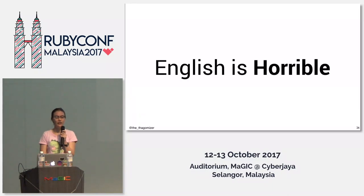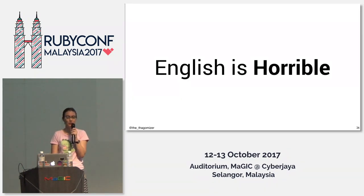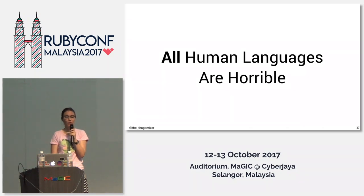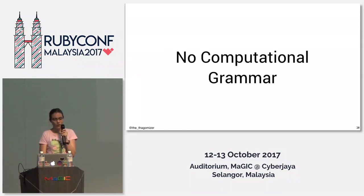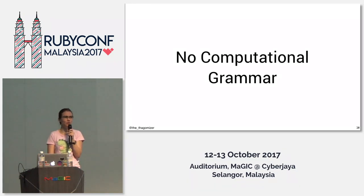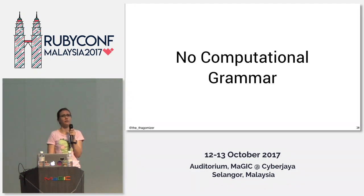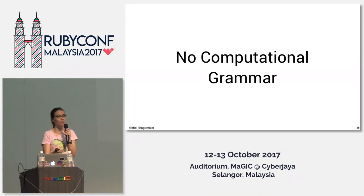English is horrible, and I didn't even get into irregular verbs, slang, idioms, and all the other bits that make a human language a human language. But all human languages are horrible — in these ways or in different ways. Every language has weird things you only understand once you're fluent. One of the big things that makes human languages hard for computers is there are no formal closed grammars — I can't make a flow chart for how to make a valid sentence in English.